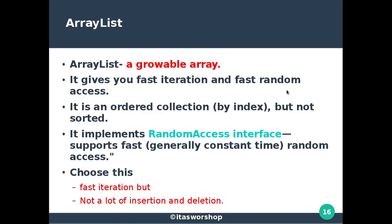ArrayList is nothing but a growable array. It gives you fast iteration and fast random access. It is an ordered collection by index but not sorted — the value of each index item can be random or sorted, but it is not sorted by nature. It is ordered and follows indexing. The random access interface is used when you just want to iterate any object randomly.